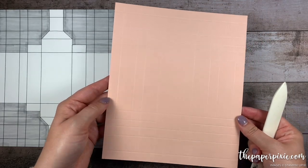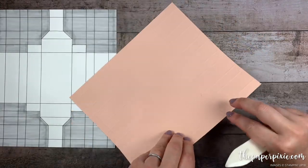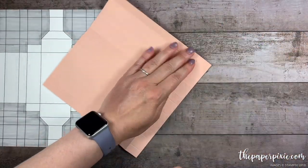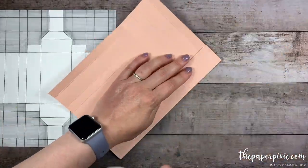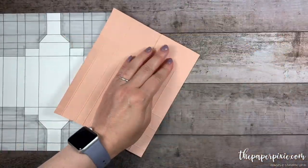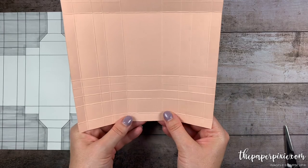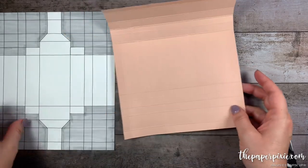Next I'm going to fold and burnish on all the score lines that go all the way across the paper. Now that all that folding and burnishing is done, we're going to go ahead and cut away some pieces. And what I like to do, I kind of cut from the back side of the paper because it's easier to see my score lines.